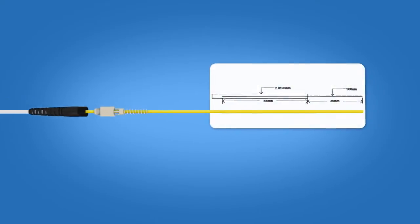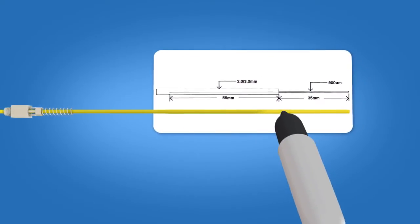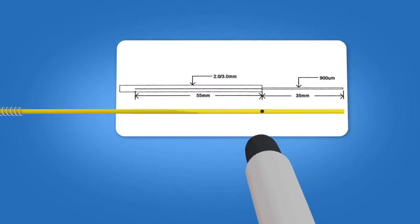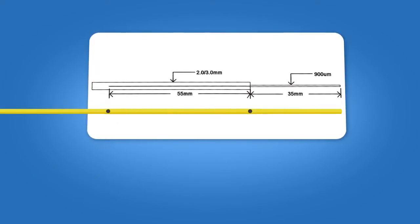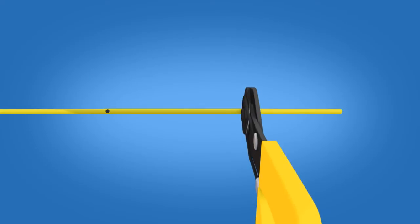Using the template on the front of the connector packaging, mark the cable at 35 millimeters and 90 millimeters from the end of the cable. Strip 35 millimeters of three millimeter jacket from the cable exposing the Kevlar and 900 micron fiber.